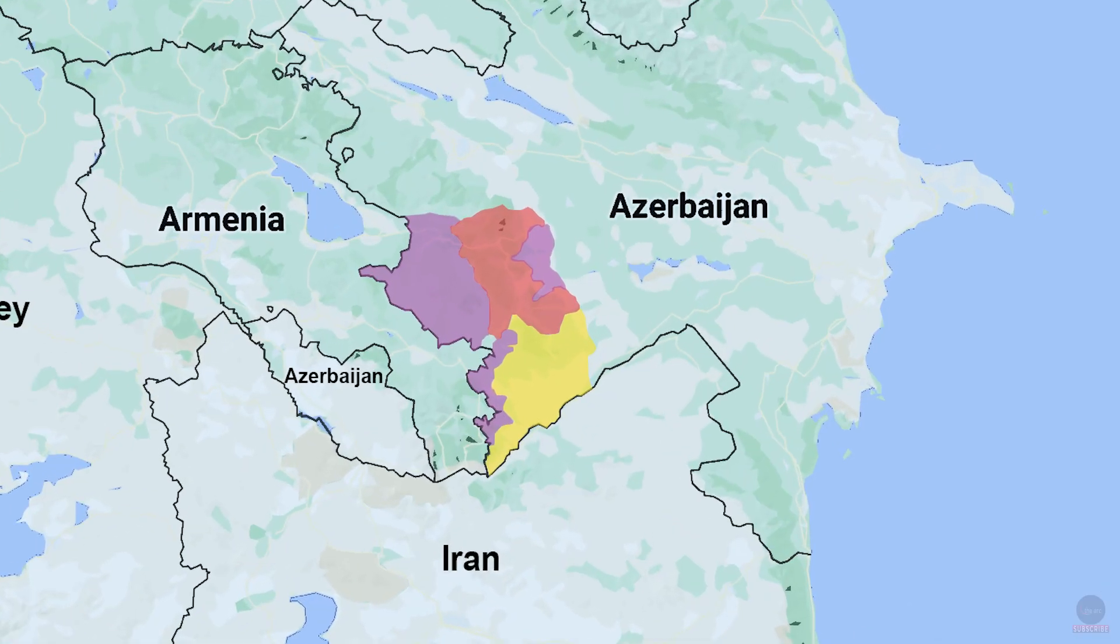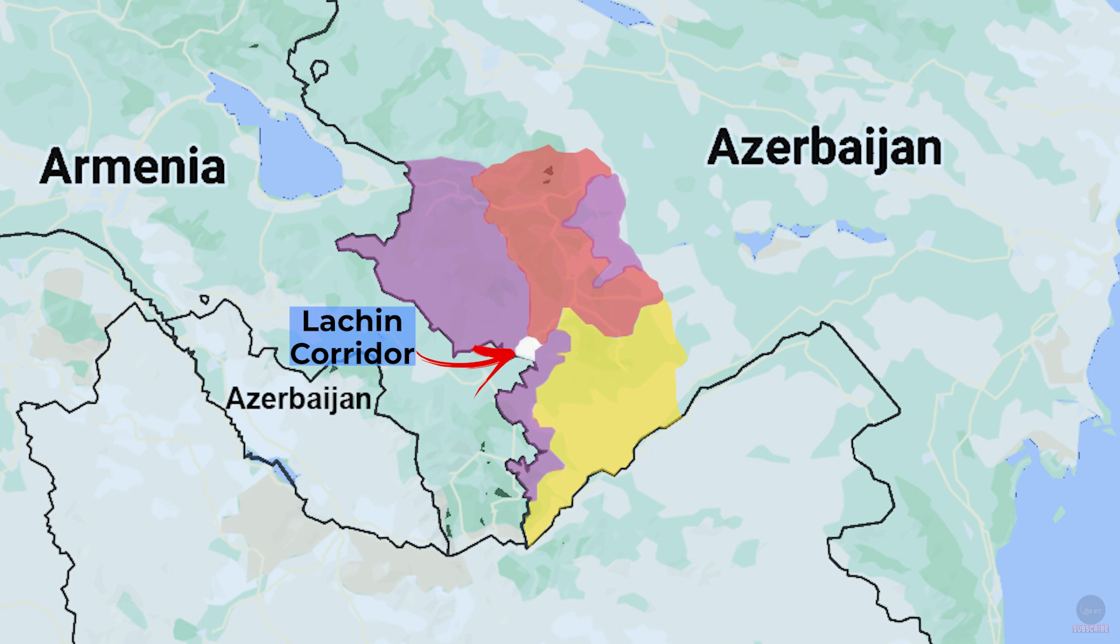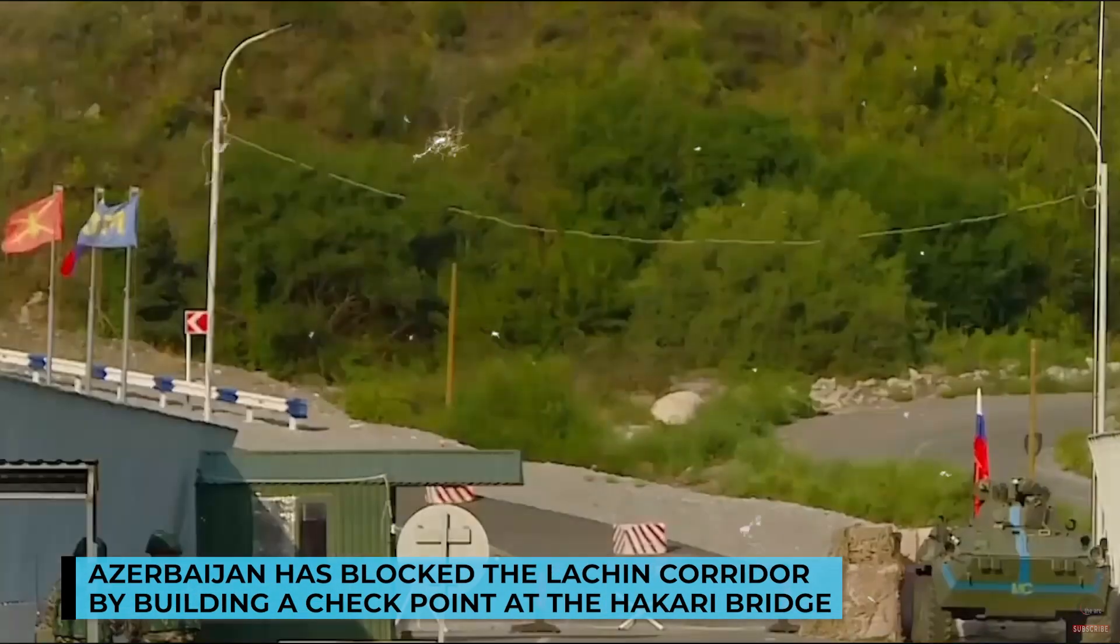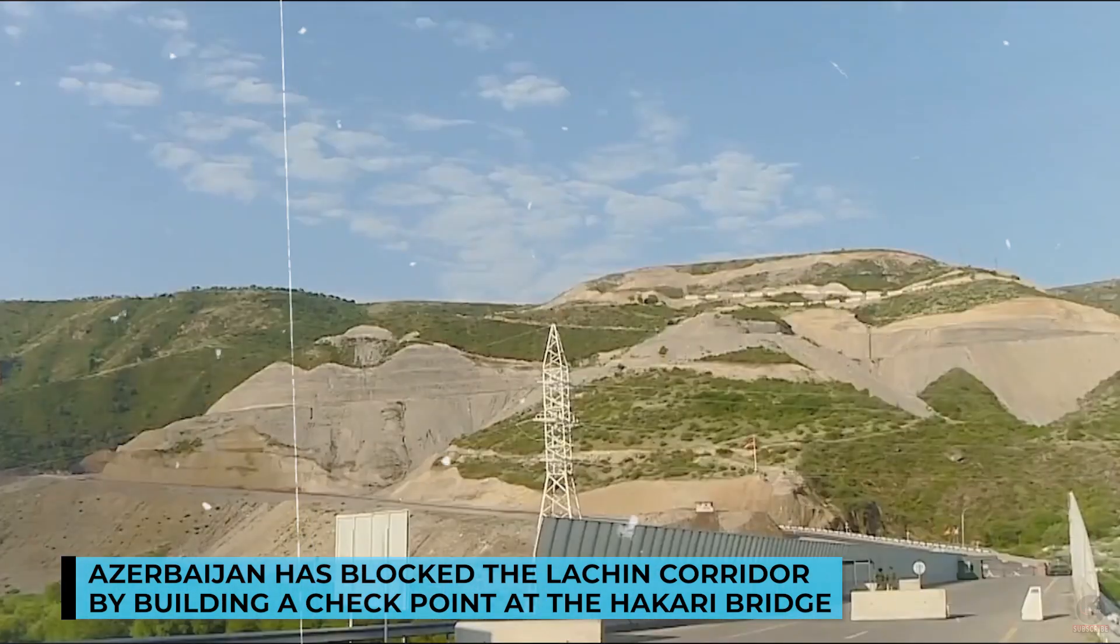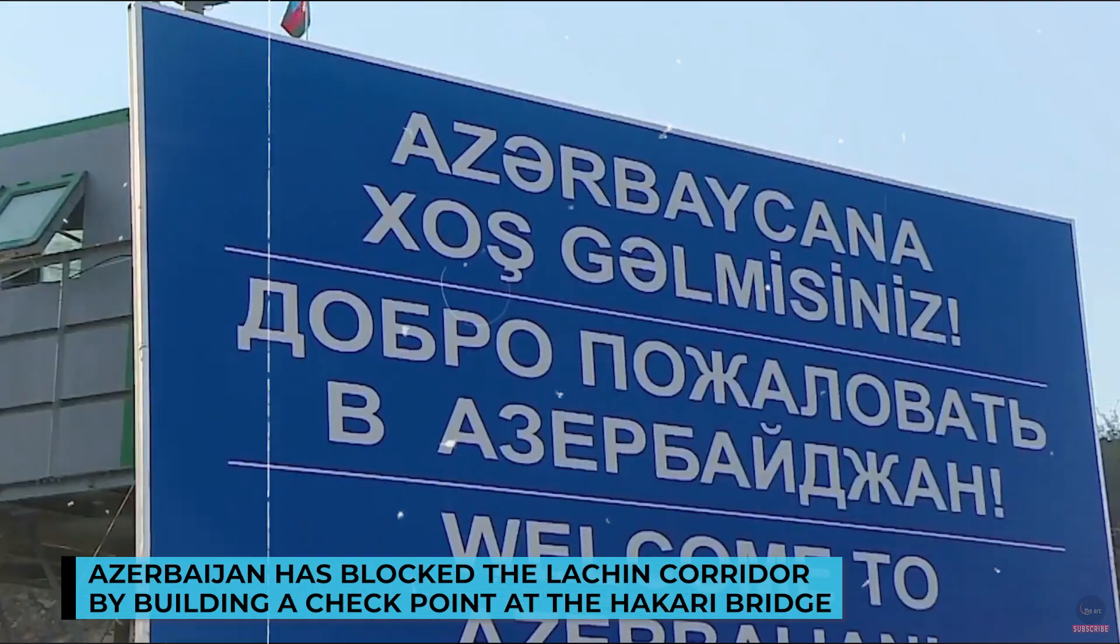Things took a turn for the worse when Azerbaijan mounted a large-scale attack on Armenia in September 2022. On 12 December 2022, Azerbaijan blocked the Lachin Corridor, which is the only road connecting Artsakh to Armenia and to the outside world. The 5km wide Lachin Corridor lies in Azerbaijan territory but was under the control of Russian peacekeeping forces as a condition in the 2020 ceasefire agreement. But Azerbaijan built a checkpoint at the Hakkari Bridge in April 2023 and created a blockade in violation of the ceasefire agreement.